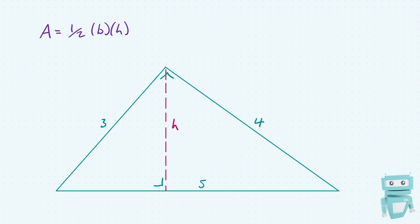To find the value of h we're going to do a little trigonometry using the side lengths we already have. We can first find the value of this angle, which I'm going to call x. The value of x can be expressed using sine because we have a side length opposite x which is 3, and the hypotenuse is 5. That means we can set up the equation: sine x equals 3 over 5, which is the opposite over the hypotenuse. We can also express x using another fraction of sides: x is also an angle involving h as the opposite and 4 as the hypotenuse.